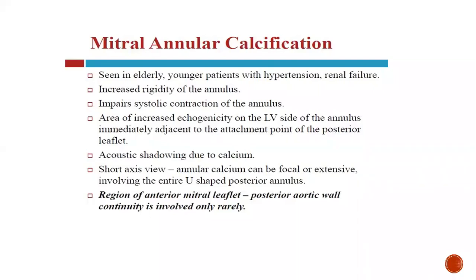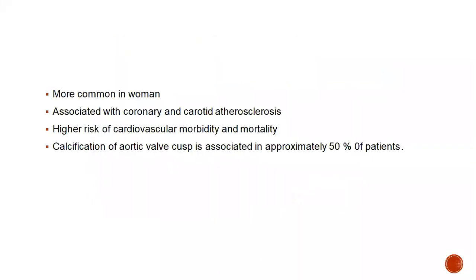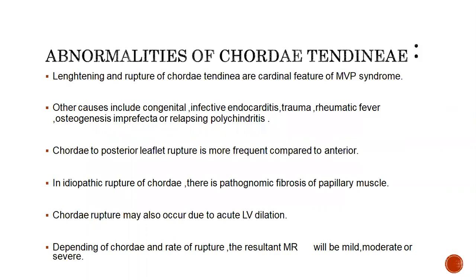Annular calcification may be focal or extensive, involving the region of anterior-posterior leaflet continuity. Mitral annular calcification is more common in women and is associated with coronary or carotid atherosclerosis. Calcification of the aortic valve cusp is associated with mitral annular calcification in approximately 50% of the population. Regarding abnormalities of the chordae tendineae, lengthening and rupture of chordae tendineae is generally seen in mitral valve prolapse syndrome. Other causes include congenital abnormalities, infective endocarditis, rheumatic fever, osteogenesis imperfecta, and other connective tissue disorders.